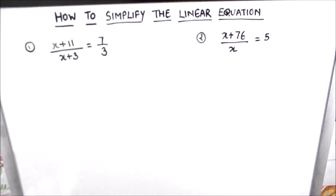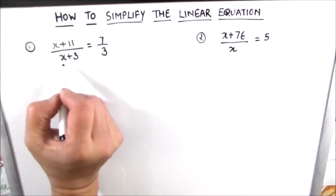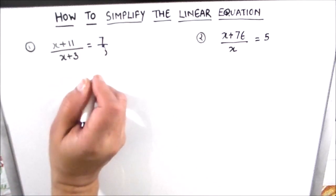So let's start with our first example. Here we have an equation: x plus 11 divided by x plus 3 is equal to 7 by 3.